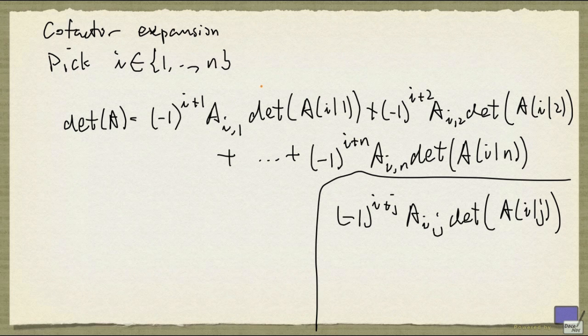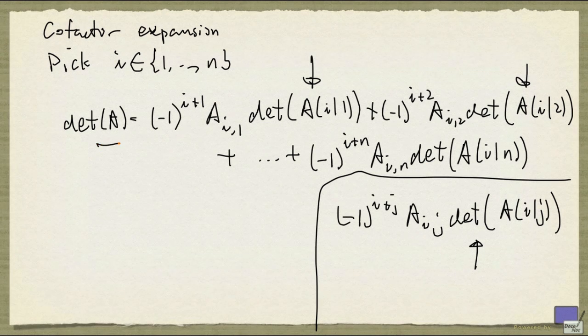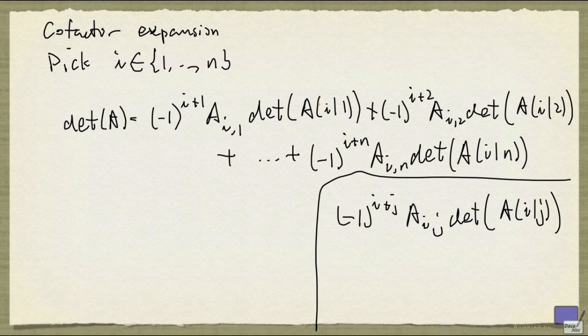Now, how does this help us? Well, the key is that each of these determinants involves a matrix that is of size 1 less than the original matrix. So this is a recursive way of computing a determinant. We can apply the formula again to each of these matrices, and eventually we'll get down to 2 by 2 matrices, which we can compute.